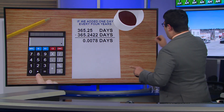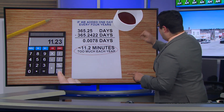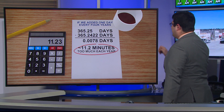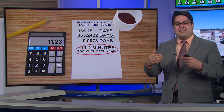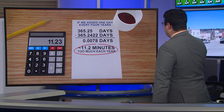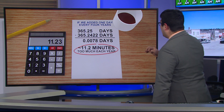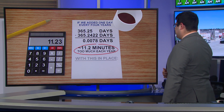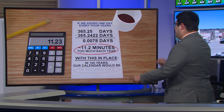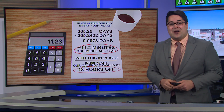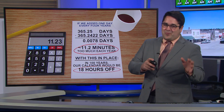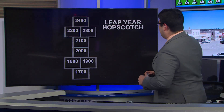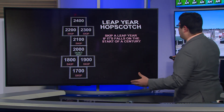Actually, no — we are overestimating a little bit. If we just added one day every four years, that means we would have 11.2 minutes longer than we should every single year. That means in 100 years, our calendar would be roughly 18 hours off, which doesn't sound like too much, but it's still a little bit too much. So how do we fix that problem?